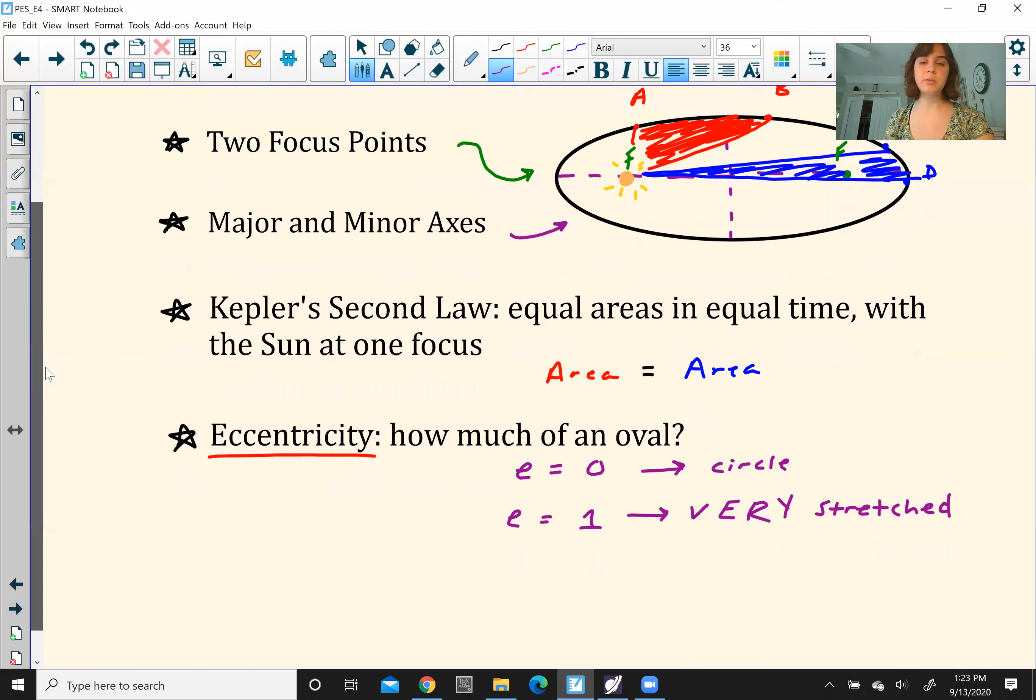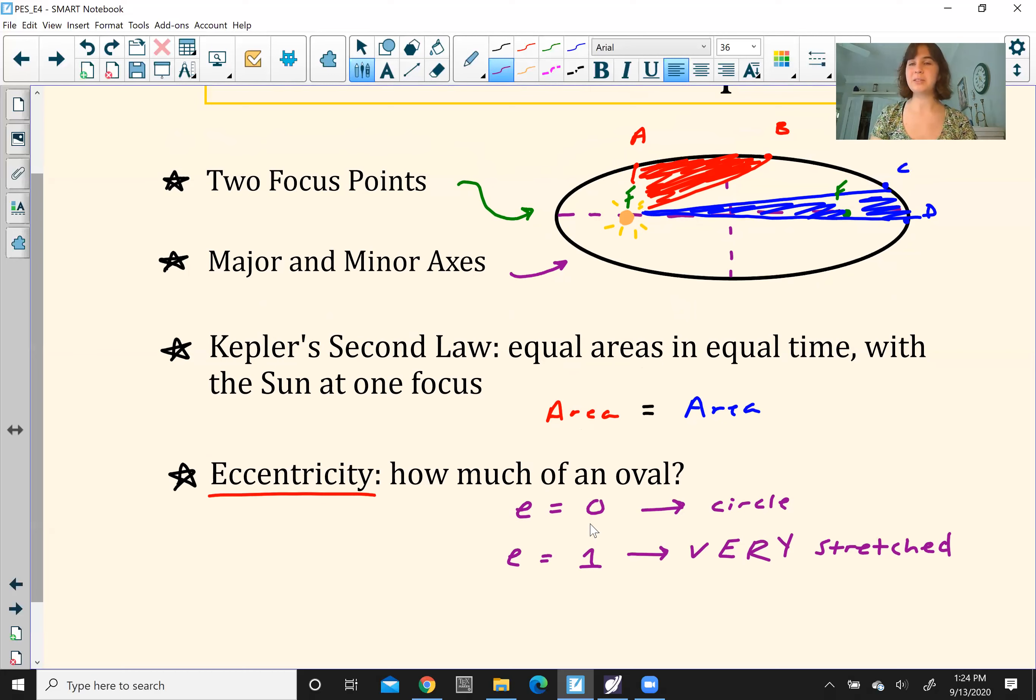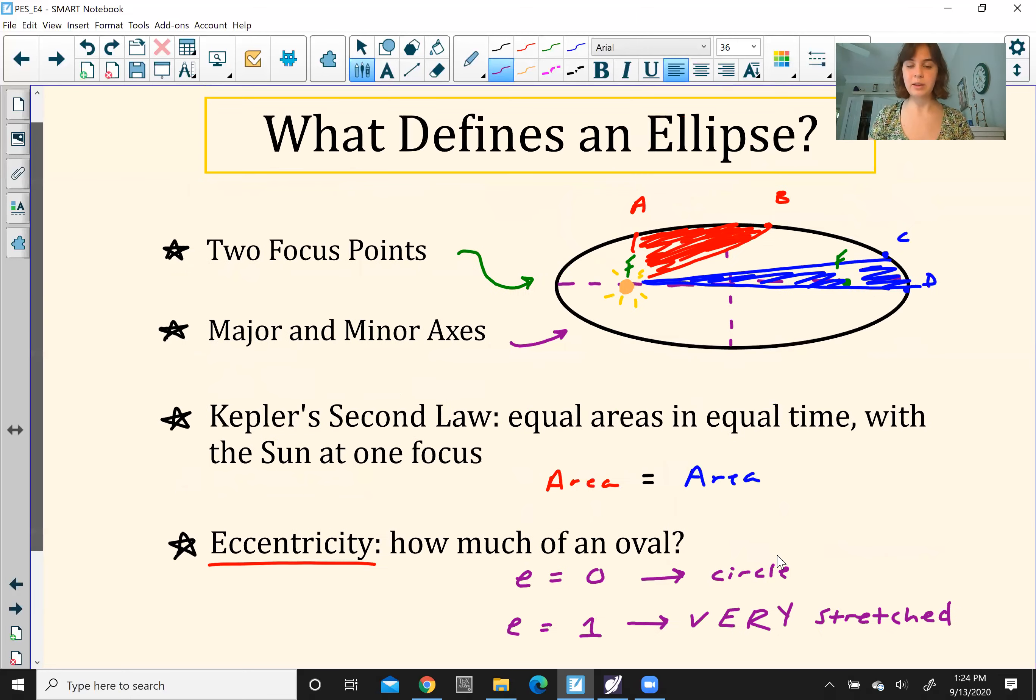And then one more characteristic that will tie in to Kepler's second law is eccentricity. In simple terms, it's just how much of an oval the ellipse is. An e value of zero kind of looks like a circle actually, that's a good way to remember it. An e value of zero, it's just a circle. So not an oval whatsoever. An e value of one is going to be very stretched out. There's this huge difference between the length of the major axis and the length of the minor axis. So I know that was a lot of information, but here are some characteristics of an ellipse.